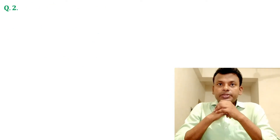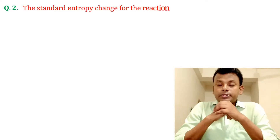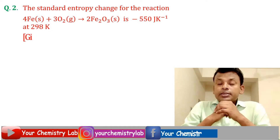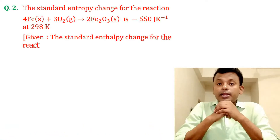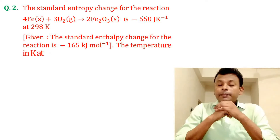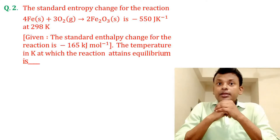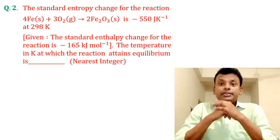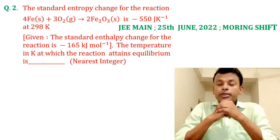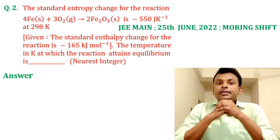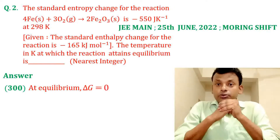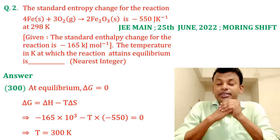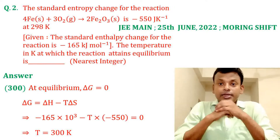Question 2. The standard enthalpy change for the reaction 4Fe + 3O₂ → 2Fe₂O₃ is −550 J/K. The standard enthalpy change for the reaction is −165 kJ/mol. The temperature in Kelvin at which the reaction is at equilibrium is the nearest integer. This question was set in JEE Main 25th June 2022 morning shift. Answer is 300. At equilibrium ΔG = 0, so ΔG = ΔH − TΔS. Putting in all values gives T = 300 K.